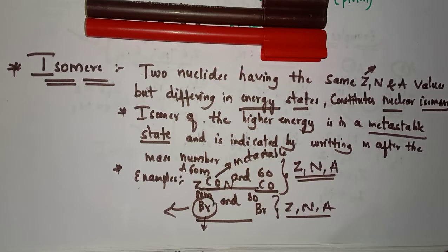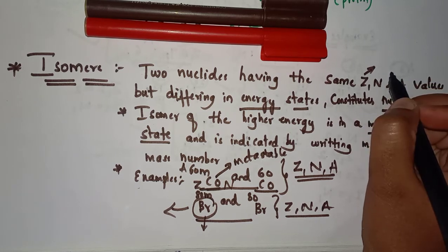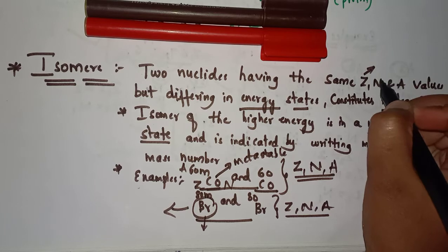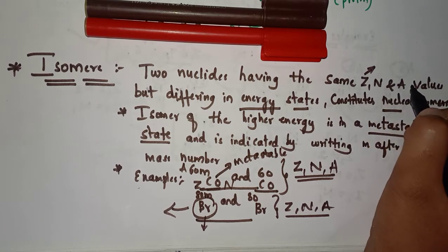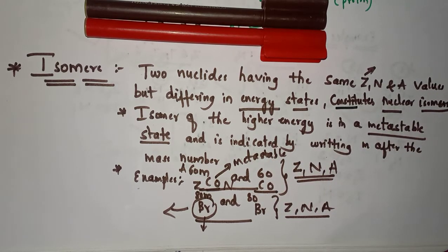Now coming to isomers, here is the definition: two nuclides having the same Z, N, and A values — that means the same atomic number (number of protons), same neutron number N, and same mass number A — but differing in energy states. This constitutes nuclear isomers.